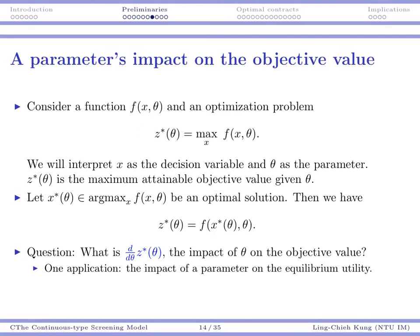Here, z*(θ) means that given some parameter theta, you try your best to find an optimal x, and then according to your optimal decision, how much you are going to earn. So this is your optimized objective value, or the maximum attainable objective value given theta — it's a function of theta.